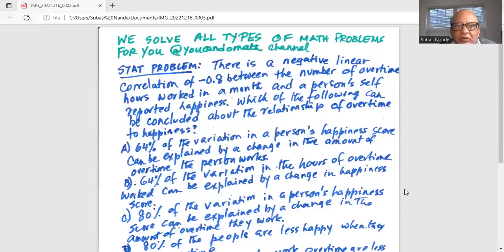There is a negative linear correlation of minus 0.8 between the number of overtime hours worked in a month and a person's self-reported happiness. Which of the following can be concluded about the relationship of overtime to happiness?